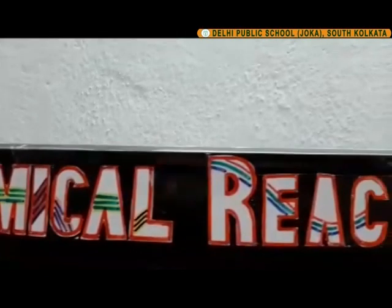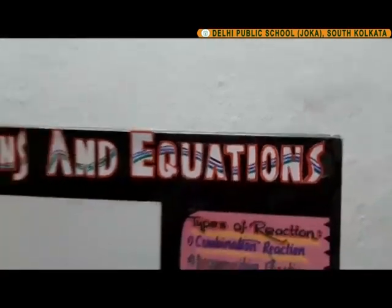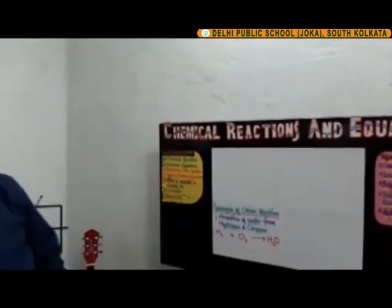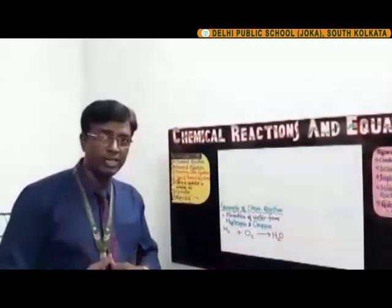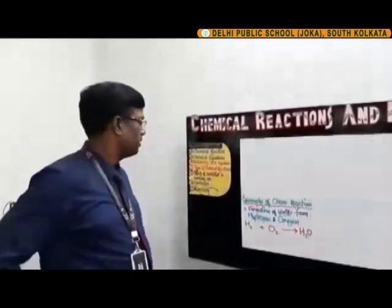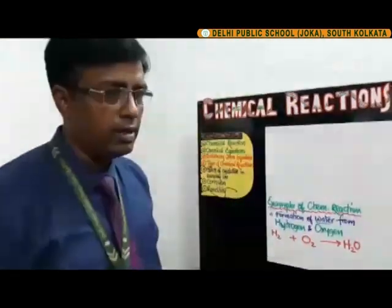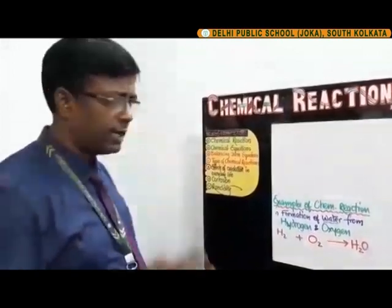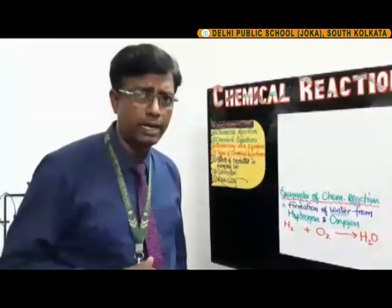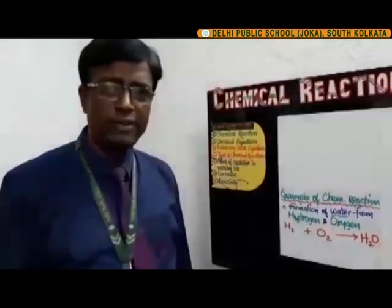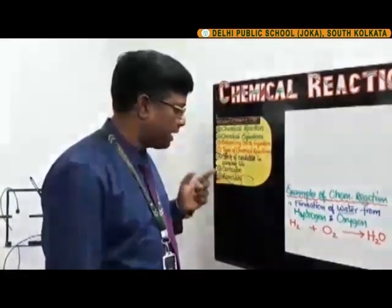Welcome, let's begin our journey of chemistry with the first chapter: Chemical Reactions and Equations. The topics we'll cover are chemical reactions, chemical equations, balancing of chemical equations — which is very critical and important — using the trial and error method and the linear equation process. We'll also discuss effects of oxidation in everyday life, corrosion, and rancidity.